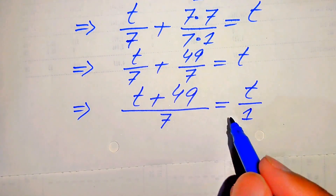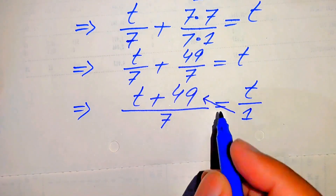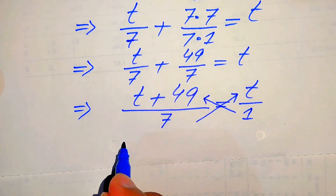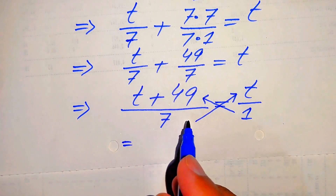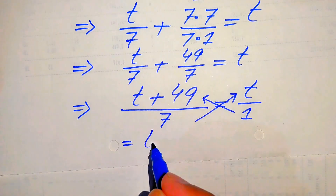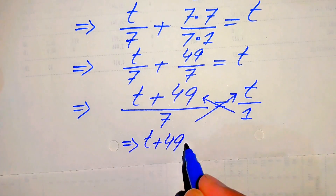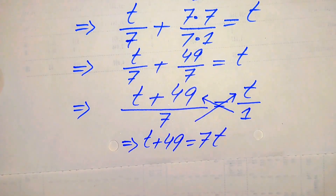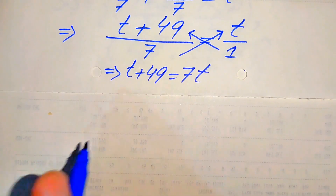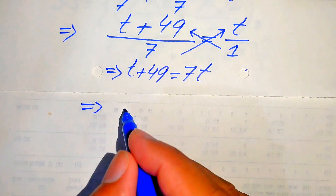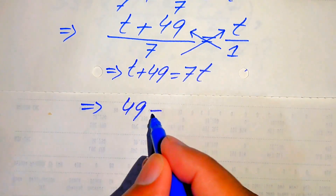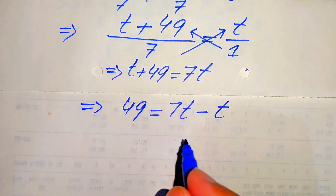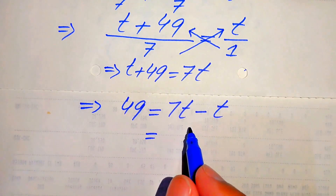We now solve this using cross multiplication. Multiplying 1 on the left term, after cross multiplication it is written as 1 times (t plus 49) equals 7 times t, which gives t plus 49 equals 7t. We move this t to the right hand side and get 49 equals 7t minus t.